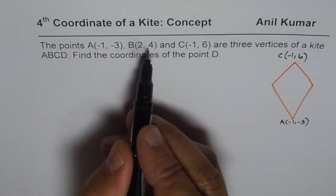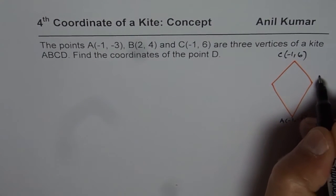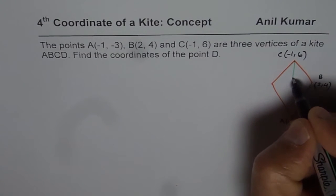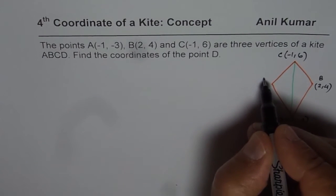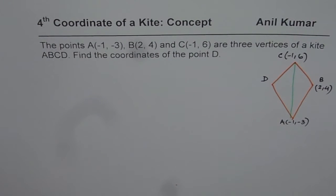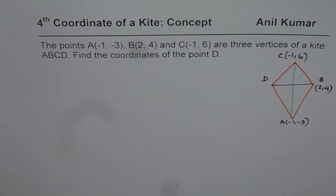B is (2, 4). That means on the right side of -1, so let's say this point is (2, 4). As you can see here, we have a four-sided figure, and in this figure we have to find the fourth point D so that we get a kite.